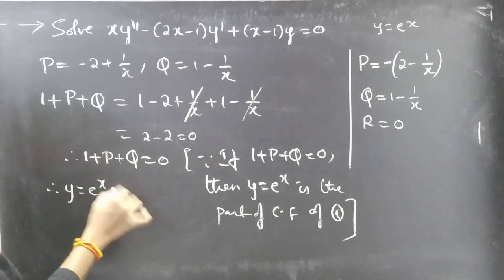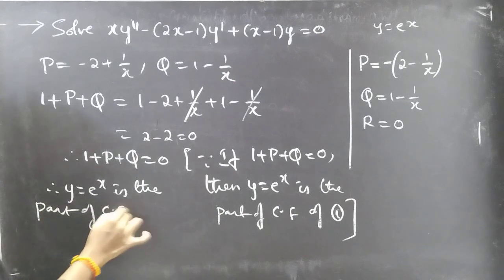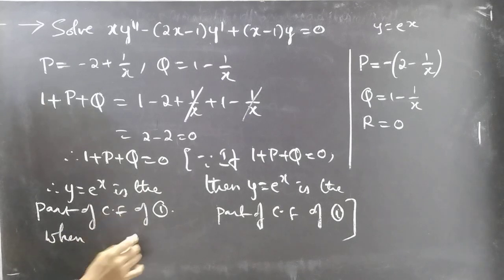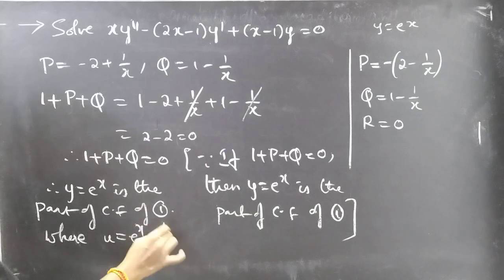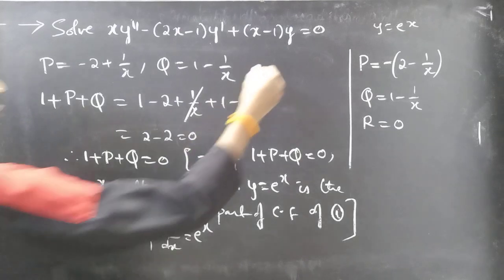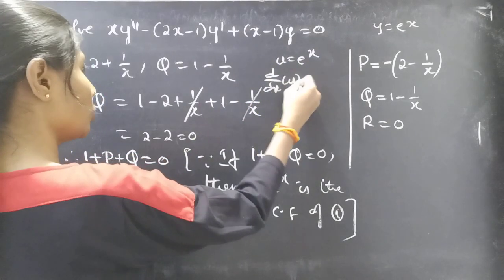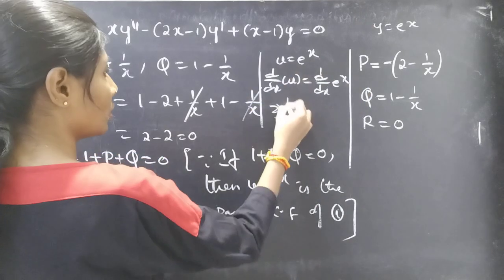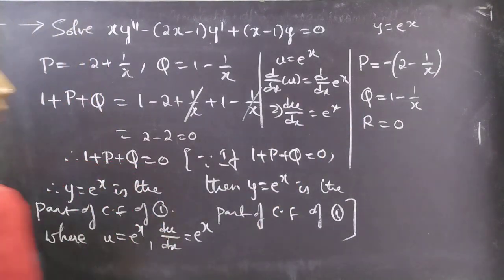Therefore y = e^x is a part of the complementary function of equation (1). Let u = e^x. Differentiating both sides with respect to x: du/dx = e^x.